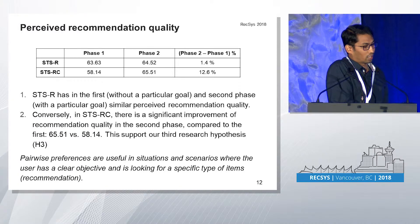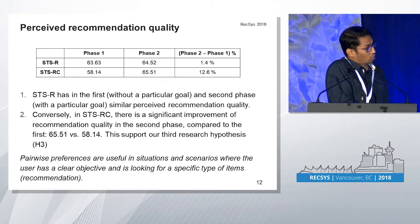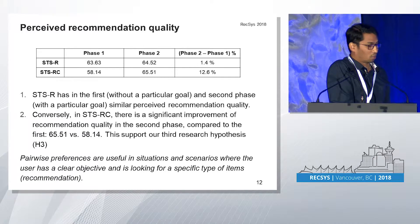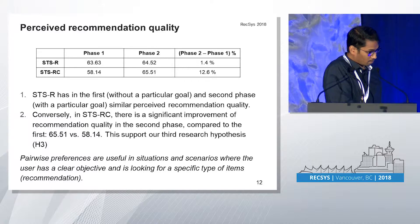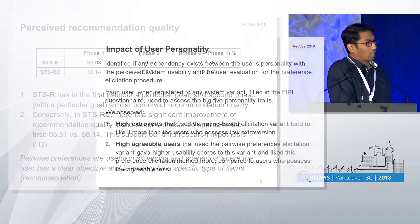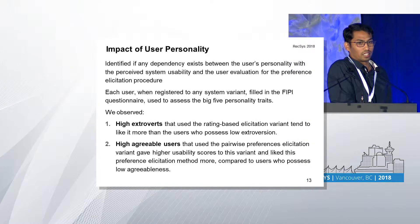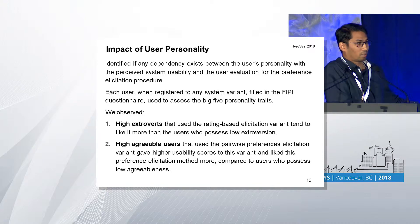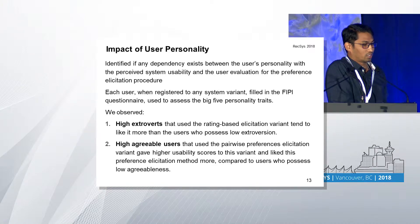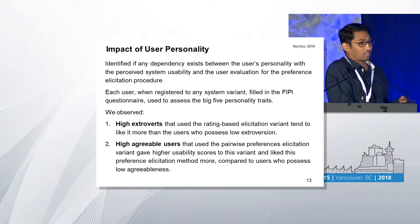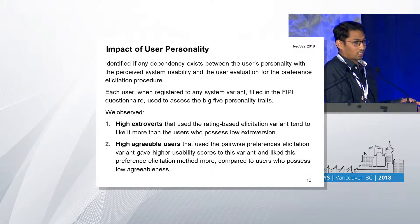Overall, our results show that pairwise preferences are useful in situations and scenarios where the user has a specific goal and is looking for a specific type of recommendations. We also tried to see if there exists any dependency between user personality and perceived system usability and user satisfaction.